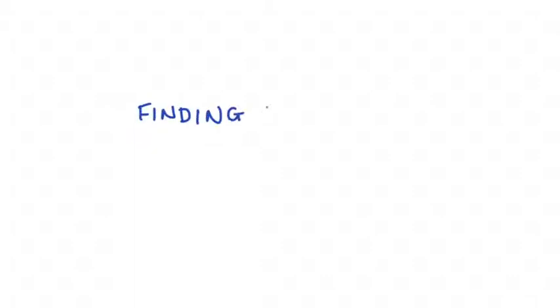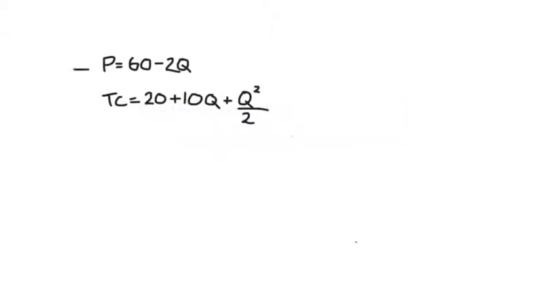Hey everyone, in this video I'm going to go over an example of solving for the monopolist equilibrium. In my example, the monopolist is going to face the demand curve P equals 60 minus 2Q, and the monopolist's total cost function is equal to 20 plus 10Q plus Q squared divided by 2.